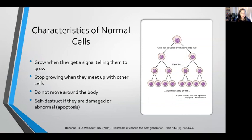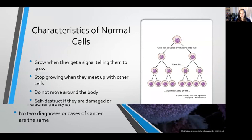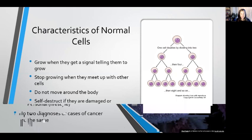In order to understand how cancer cells behave, it's important to understand how normal cells in our body behave. Normal cells grow when they get a signal from our body telling them it's time to grow, and they tend to grow in a very orderly fashion. One cell becomes two, two cells become four, four cells become eight, and so on.